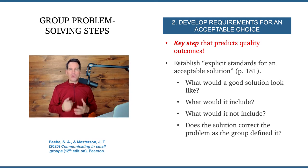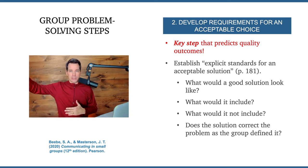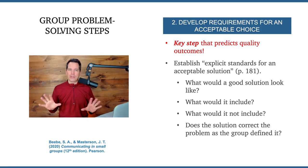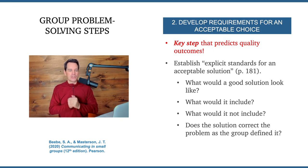Step number two is to develop requirements for an acceptable choice in the end. This is another key step that will predict whether or not your group is going to come up with a quality outcome. Some people call this the ideal choice or the ideal solution criteria — where you establish explicit standards for an acceptable solution. You have to ask questions like: what would a good solution look like? What would it include? What would it not include? For example, you might say a good solution would not increase costs above a certain level, so that way when you get to the solution stage, if it increases costs too much, then it's not yet a good solution. That's step number two — developing that acceptable criteria for a solution.